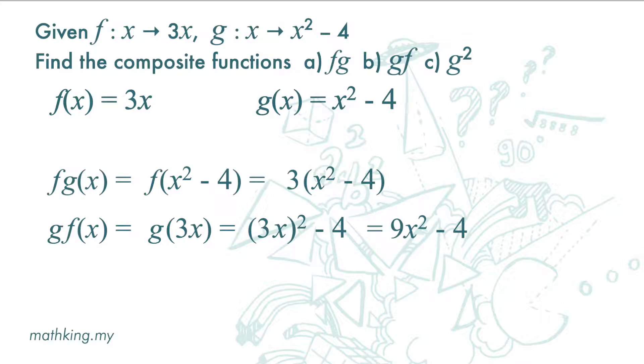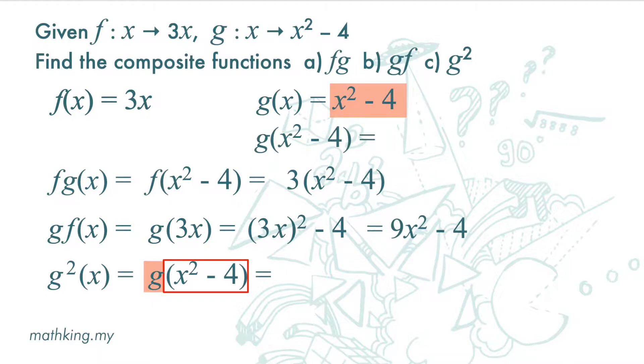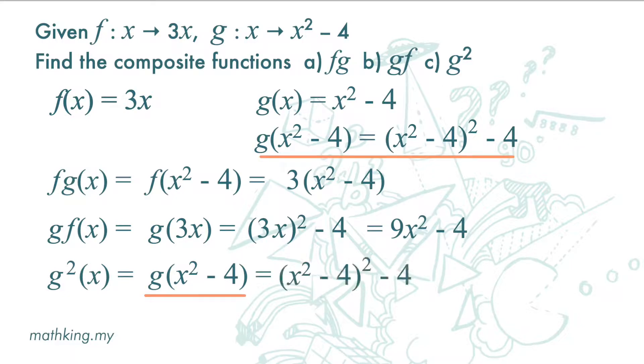For part c, we want to find the composite function g squared. So we write g²(x) here. Now g(x) is x squared minus 4. After that, this x squared minus 4 goes through function g again. Now the object is x squared minus 4 and not x. So we have (x squared minus 4) squared minus 4 again. We expand it and get x to the power of 4 minus 8x squared plus 12.